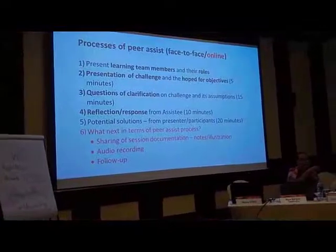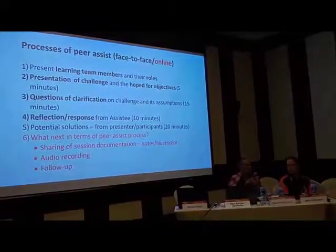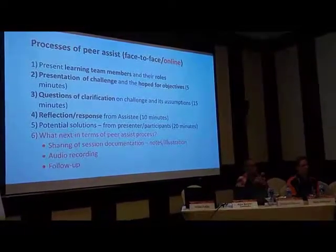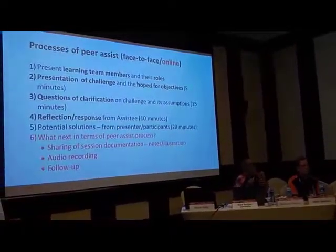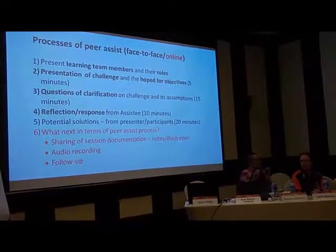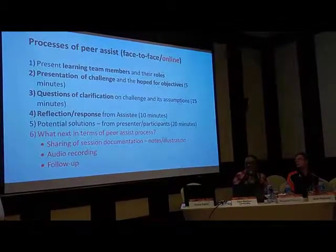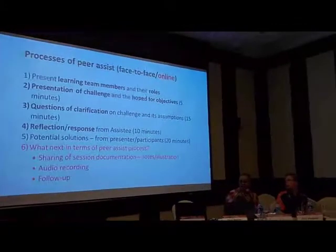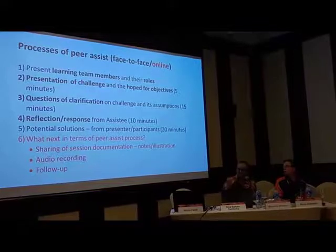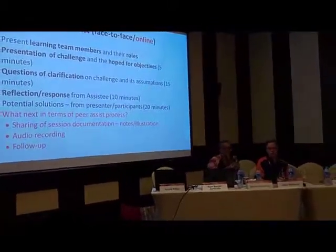We're going to have each volunteer sit at a particular table with a group of people. In that group there's the volunteer who's requesting or needing a peer assist, and somebody at the table who's tracking what is said and helping to facilitate the process. We'll start off by basically presenting your challenge and your hoped-for objectives — not a long story, short stuff. The people at the table will listen until you're finished, then ask questions of clarification on the challenges and maybe even question the assumptions behind the issue.